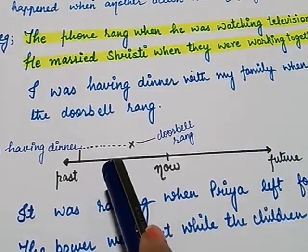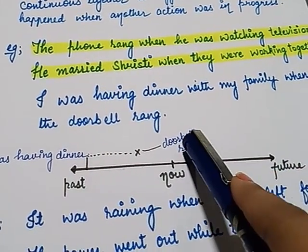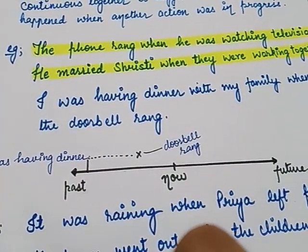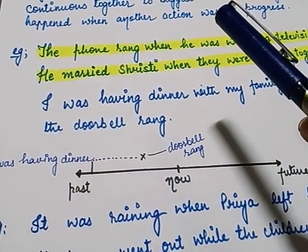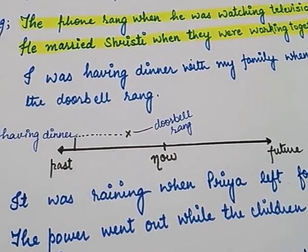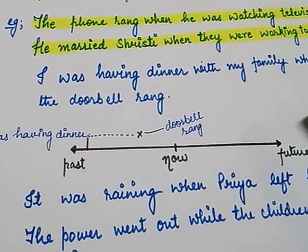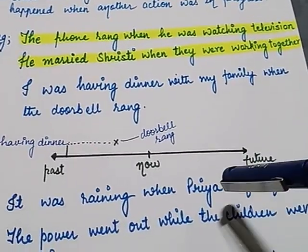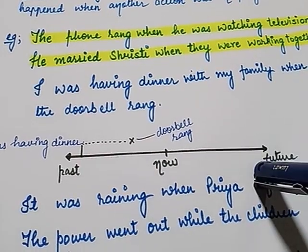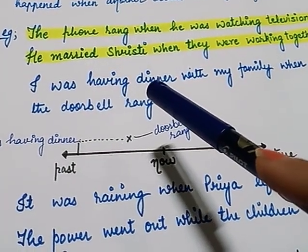I was in the middle of having dinner and something happened — the doorbell rang. So I had to put down my spoon and fork, get up from my table and go and see who it was. So past continuous tense talks about an unfinished ongoing action in the past, and normally we also mention another finished action that interrupted it. That finished action is in simple past tense form, and the unfinished action will be in past continuous tense.